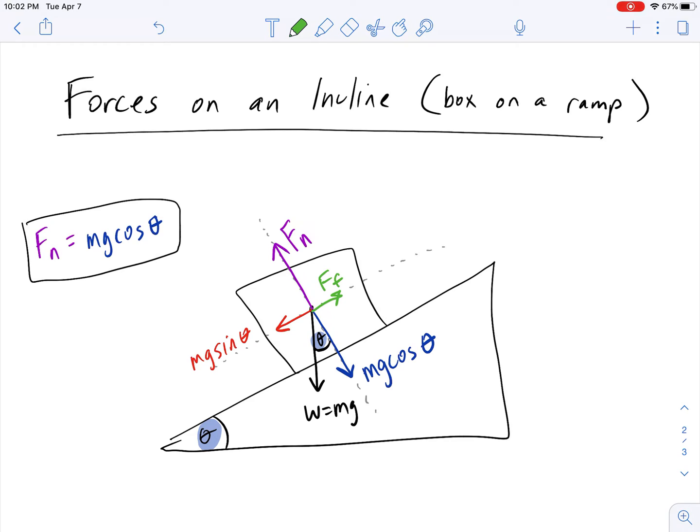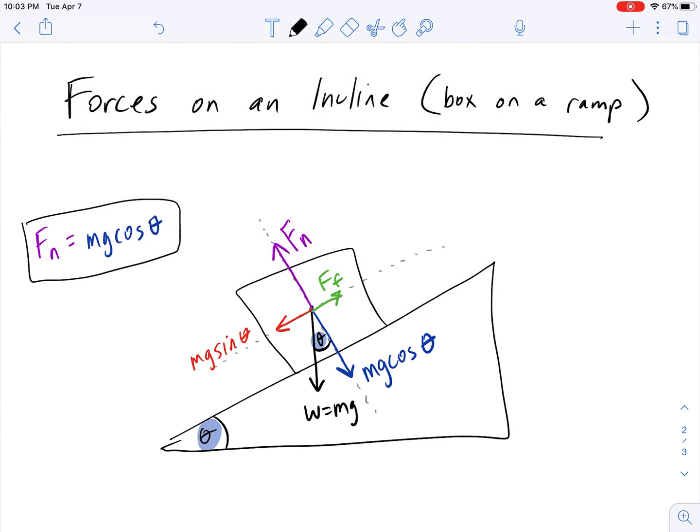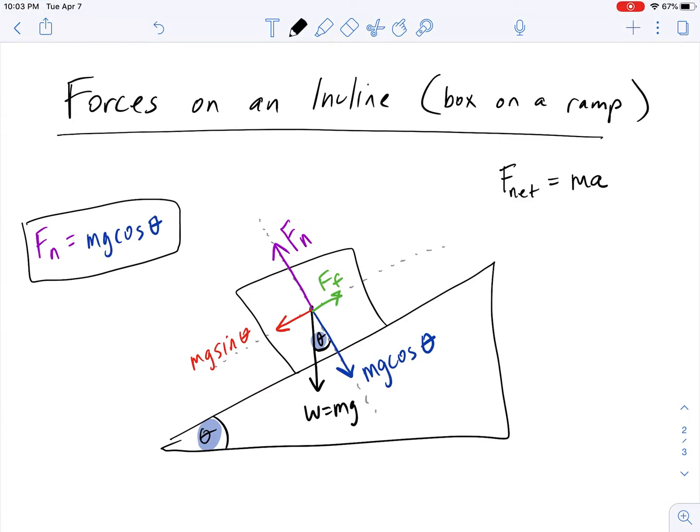If there is friction and they are asking you in the problem to maybe calculate the acceleration as the box goes down the ramp, what you have to do in that case is you have to utilize Newton's second law, which says that the net force is equal to the mass of the object times its acceleration. So that kind of leads us to how do you find the net force in that case?